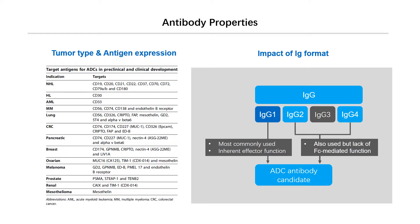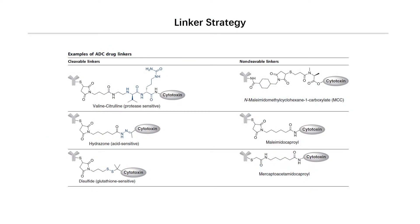IgG3 is the only subtype not yet used in ADC development. The two main classes of ADC linkers currently being explored take advantage of different mechanisms for release of the drug payload from the antibody. The first is a cleavable linker strategy, with three different types of release mechanisms. Lysosomal protease-sensitive linkers utilize lysosomal proteases such as cathepsin B, which recognize and cleave a dipeptide bond to release the free drug from the conjugate. Acid-sensitive linkers take advantage of the low pH in the lysosomal compartment to trigger hydrolysis of an acid-labile group within the linker, such as a hydrazone, and release the drug.